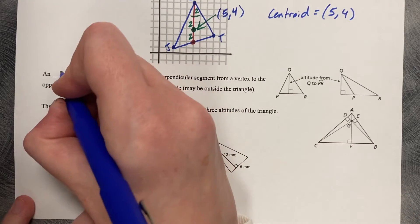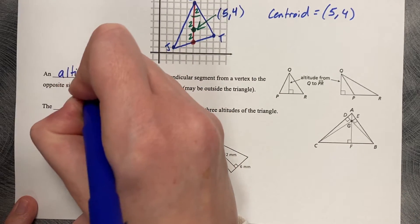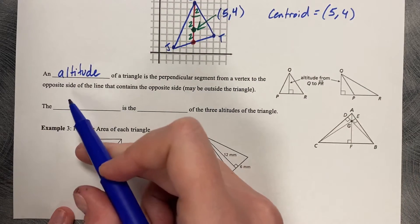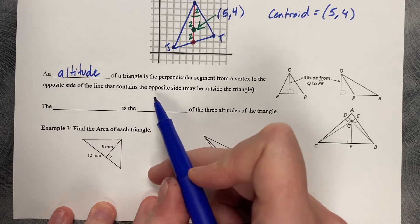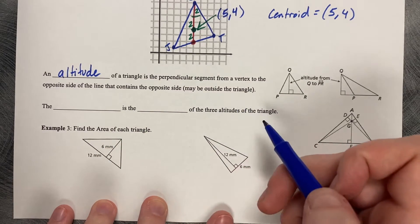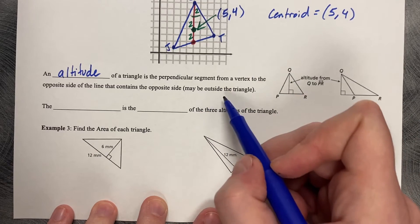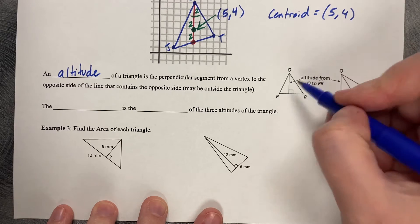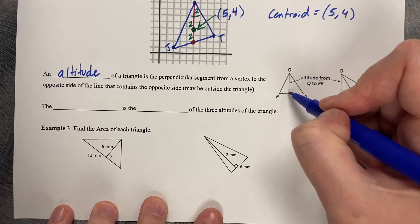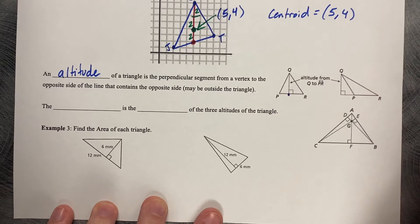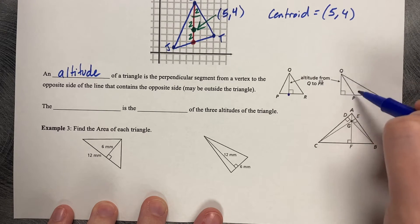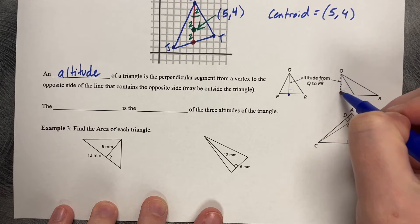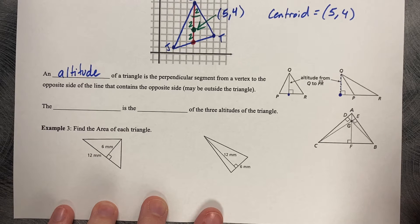Now we're going to talk about an altitude. An altitude of a triangle is the perpendicular segment from a vertex to the opposite side of the line that contains the opposite side. It may live outside of the triangle, and the time that it lives outside of the triangle is when it's an obtuse triangle. So see this acute triangle, and you draw the altitude in straight down, it lands on the opposite side. But if you have an obtuse triangle, see QPR is an obtuse angle. If you draw a line straight down from Q, the altitude actually lies outside of that triangle.